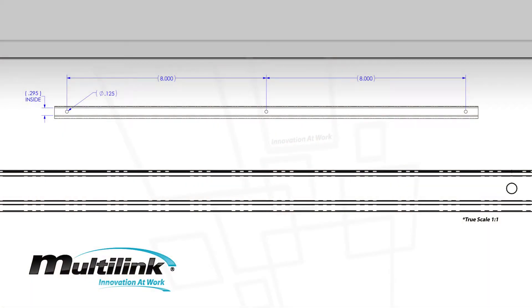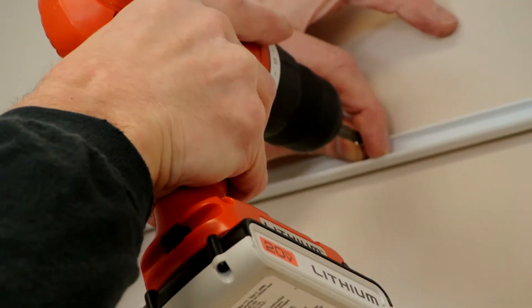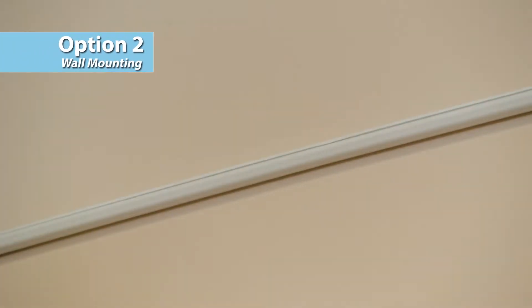Option 2: The micro molding comes with pre-installed holes at 8 inch increments. Align these holes to the studs and screw in.